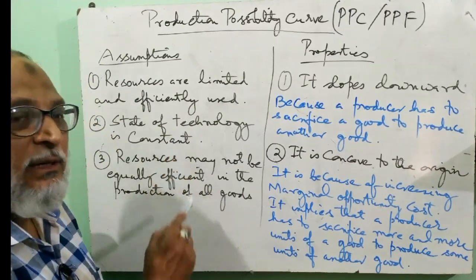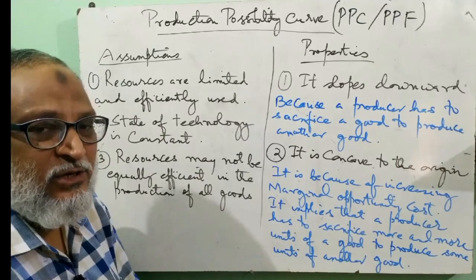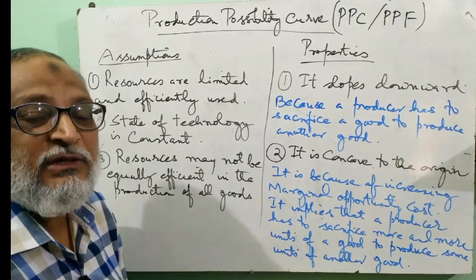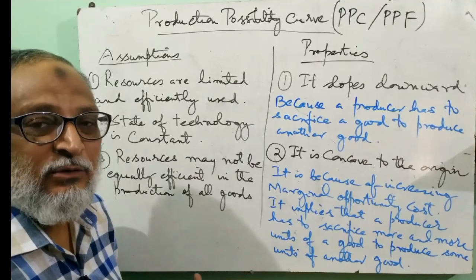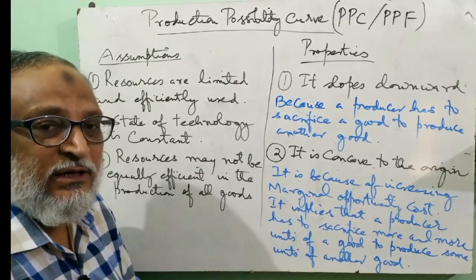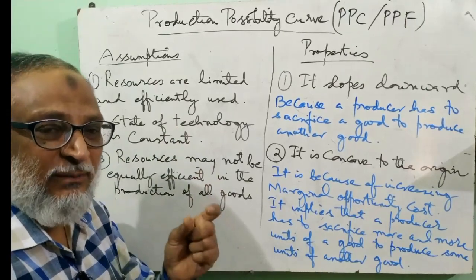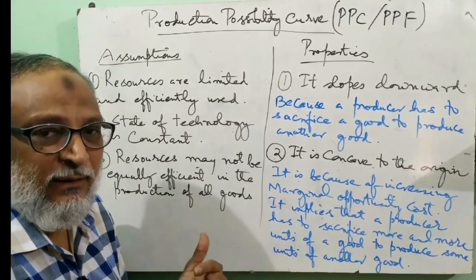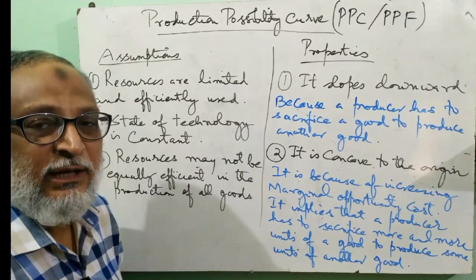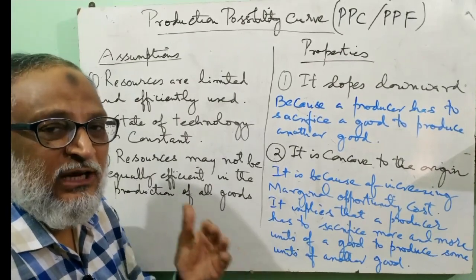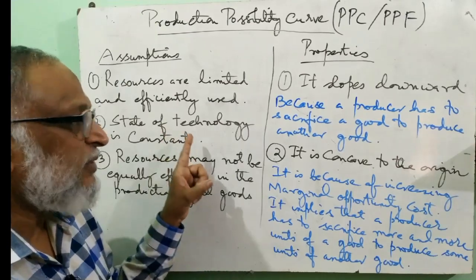Now comes the second assumption: the state of technology is constant. Because technology is a factor that does not change in a short period. There are certain limitations with the producer — it has limited capital with which it has to make all arrangements. It is not so easy that it will change the technology overnight; he has to wait and make arrangements for funds. So what we are assuming is that the state of technology which is available remains constant. This is a simple example: a small and marginal farmer who has no funds — for him, the state of technology is constant.